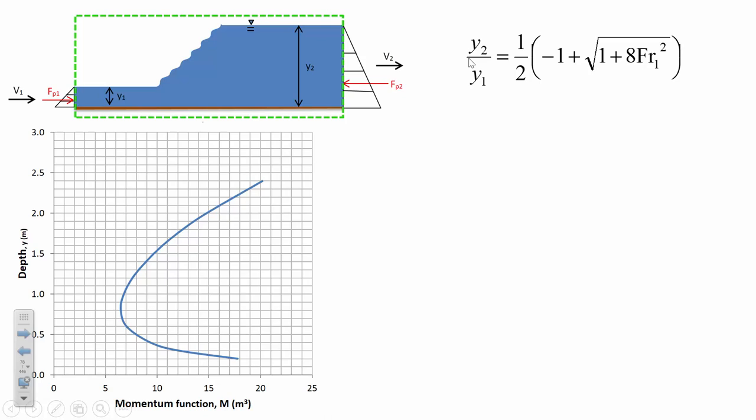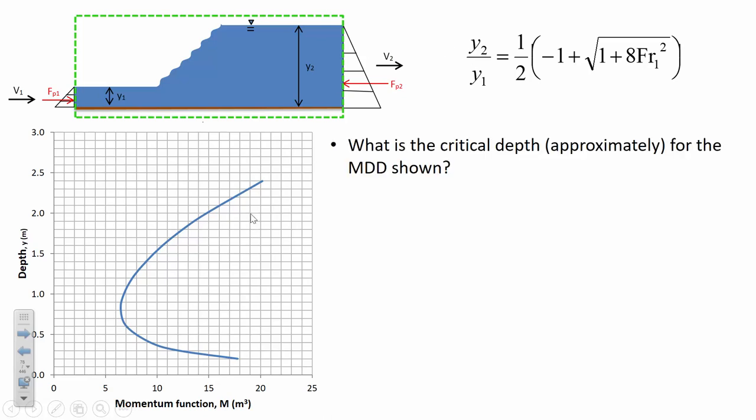On this momentum-depth diagram, let's assume we have a certain flow condition. What is the critical depth approximately for the momentum-depth diagram shown? There's only one unique point on that figure where something specific is happening. The point furthest to the left — it looks like that would be associated with a depth of about 0.8 meters — is approximately the critical depth.